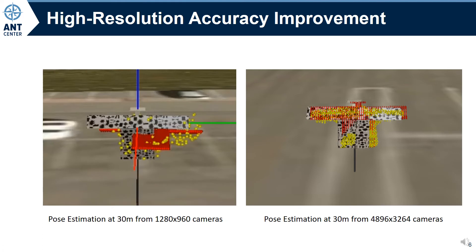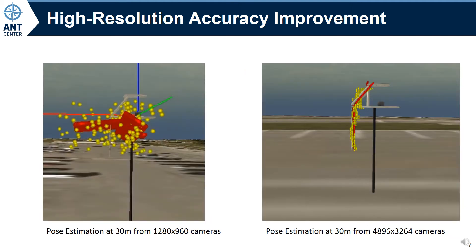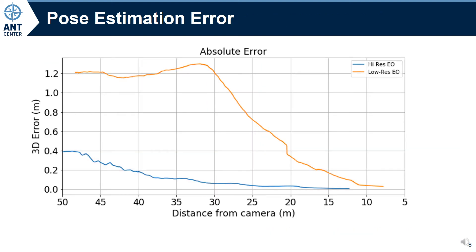The images here show pose registration at a range of 30 meters using a low-resolution camera system and a high-resolution camera system in the post-processing environment we just saw at the beginning of this video. Notice how the low-resolution cameras create a noisy point cloud and a poor registration, while the high-resolution cameras produce a clean point cloud and a precise registration. Here is a side view of the same pose registration. We can see that the error in our pose estimation, taken as the Euclidean distance between the differential GPS solution and the stereo vision pipeline solution, is substantially lower for the high-resolution system.